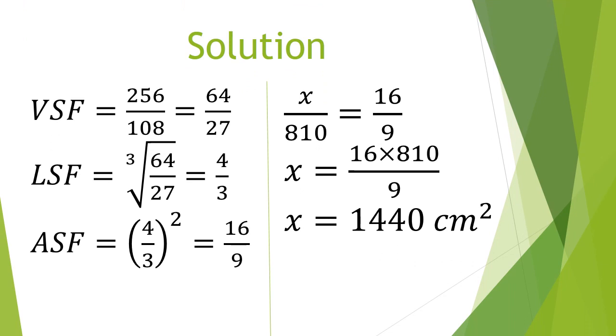Solution: volume scale factor is 256 over 108, and that gives us 64 over 27 when we simplify. Linear scale factor is cube root of 64 over 27, and that gives us 4 over 3. Area scale factor is 4 over 3 squared, that gives us 16 over 9. X over 810 is 16 over 9. So X is 16 times 810 over 9. So X is 1440 cm squared.